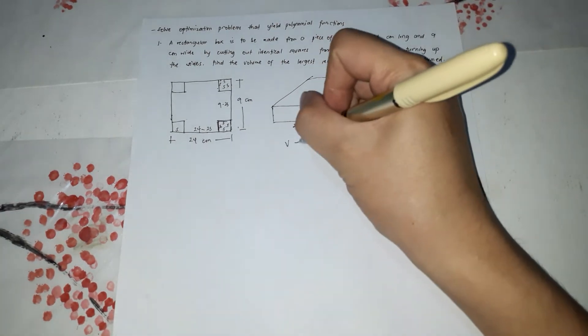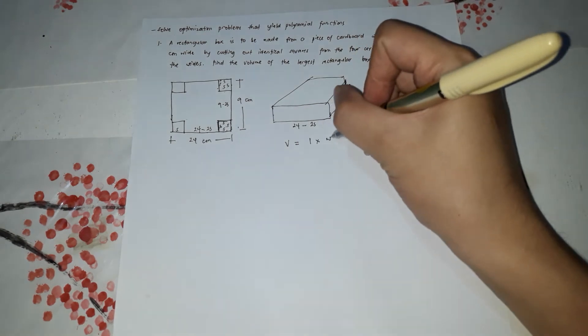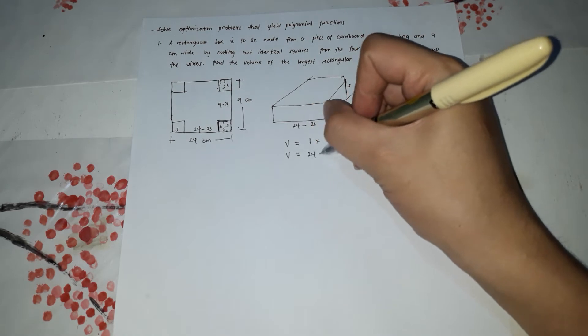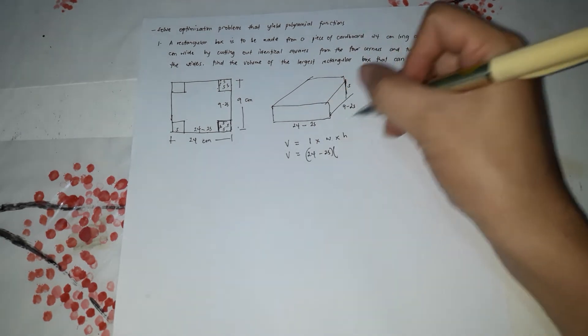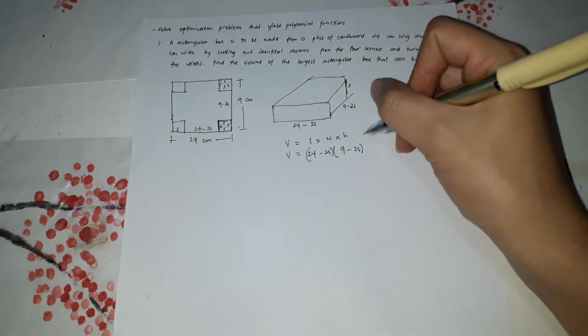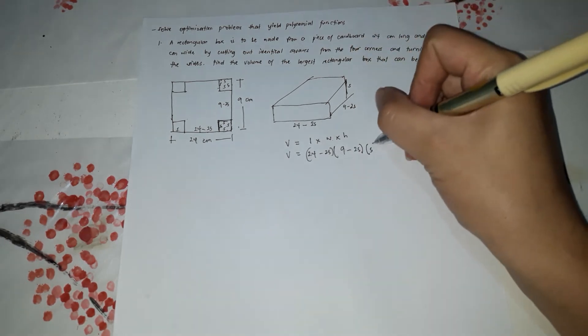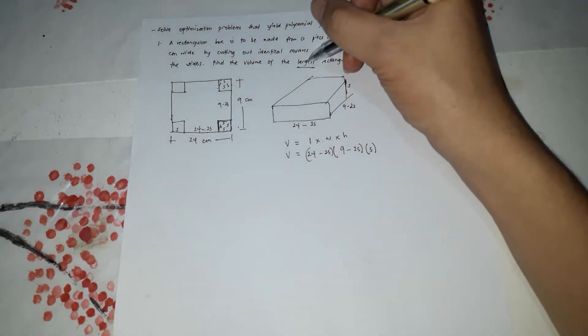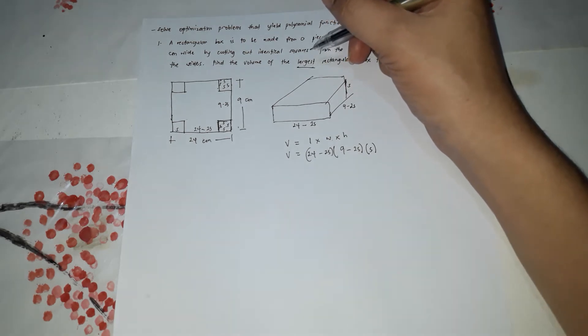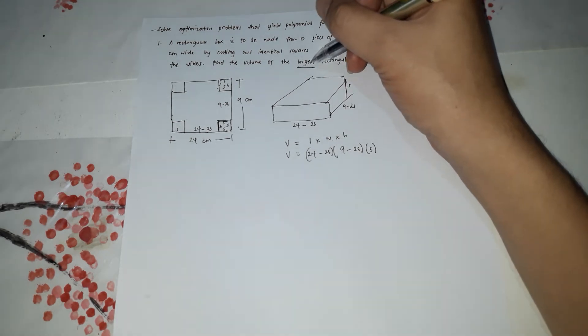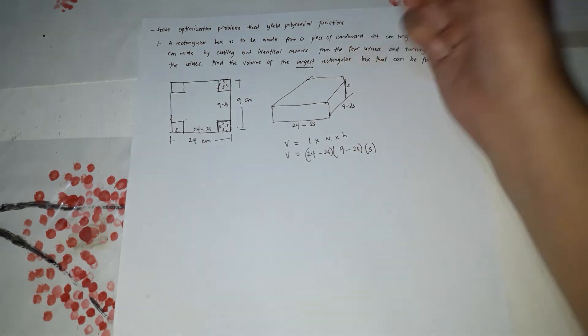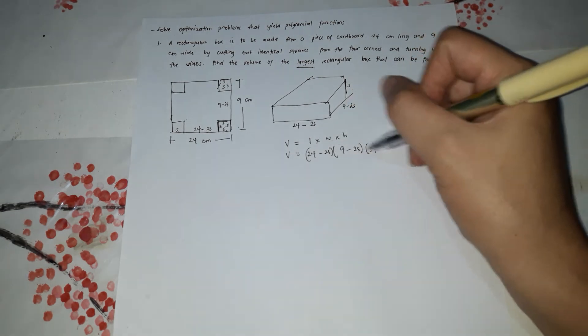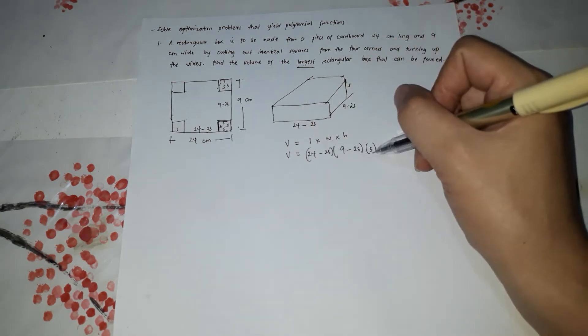So to get the volume it's length times width times height. Volume is the length which is 24 minus 2S times the width which is 9 minus 2S times the height which is S. So we're going to find the largest rectangular box. So we're going to need to get the maximum point. So from the extreme value theorem, we're going to first solve for the derivative for the critical point. So you need to solve for the derivative of the function.